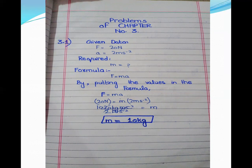We want to find mass. The formula F is equal to ma, given by Newton's second law of motion. Putting the values: F is 20, acceleration is 2 meters per second squared. Dividing both sides, the value of mass is 10 kg.